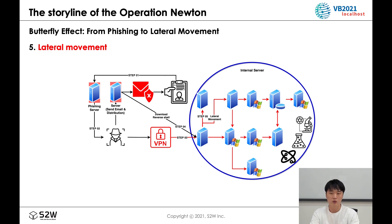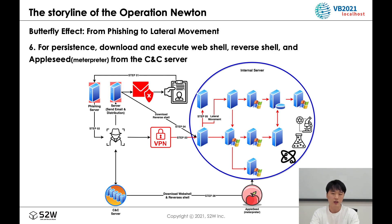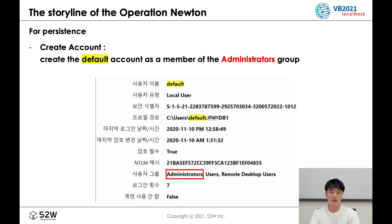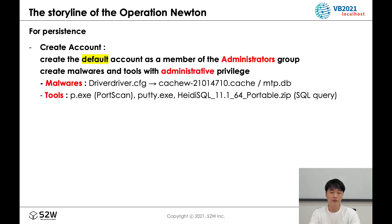Lateral movement is performed using already collected server access accounts. The attacker was able to access quite a few internal servers — not only Windows, but also Linux servers. For persistence, download and execute web shell, reverse shell, and AppleSeed malware through Meterpreter's C2 server. The web shell is a JSP file. The attacker sends a base64-encoded command to the web shell using the STIR parameter, and the execution result is output to a web page by the print function. A default account is created as a member of the administrators group — the account named 'default' does not originally exist on Windows. Tools identified were PuTTYScanner, PuTTY, and an SQL-coring tool.